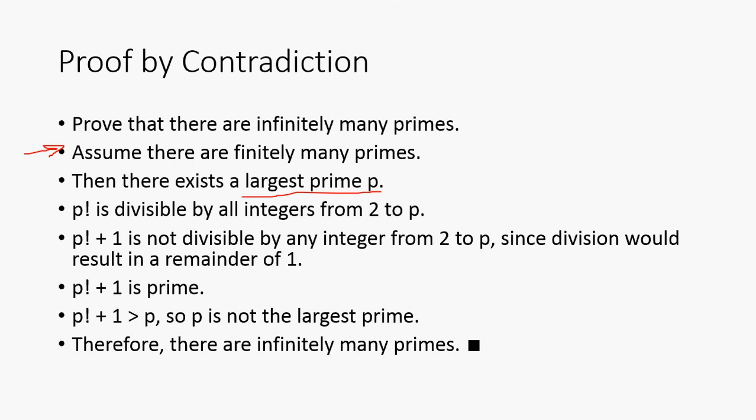P factorial, if you remember what factorial is, it's going to be P times P minus one times dot dot dot all the way down to one. We're just multiplying all the numbers from one up to P together. That's going to be equal to P factorial. P factorial is divisible by all integers from two to P, obviously because that's just how P factorial is defined. It's just all the numbers from two to P multiplied together.